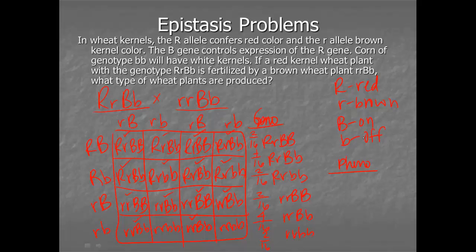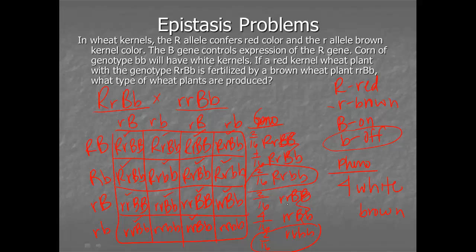Always start by looking for the off switch. I look for anything that has little b, little b because it doesn't matter what anything else is — those will be white corn kernels. So those four are white. Everything that's left has a big B, which means it's turned on and can express its gene. Now I ignore the B's and just look at the R's. I look for my recessive trait — how many are brown? Those are my little r's, so I have six that are brown, and then everything that's left will be red — six that are red.